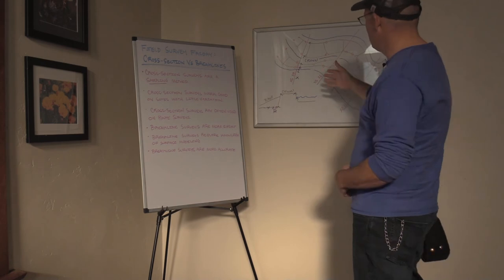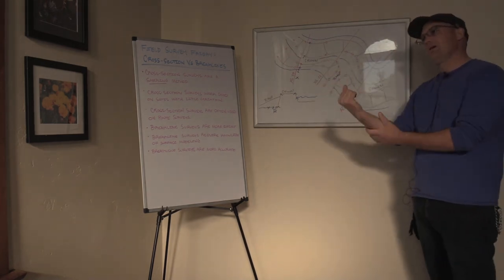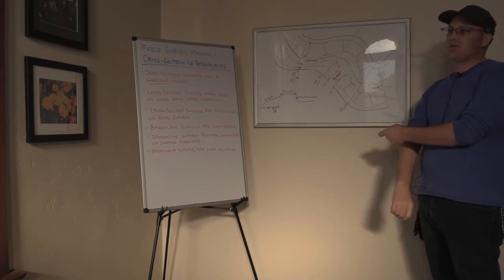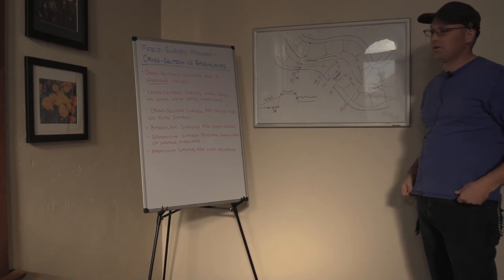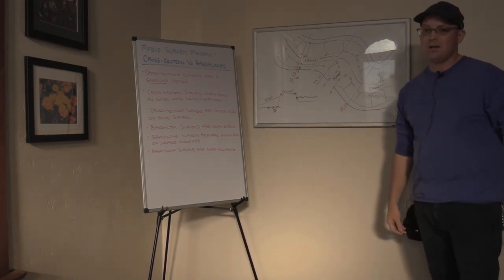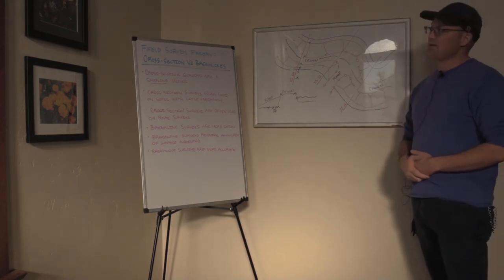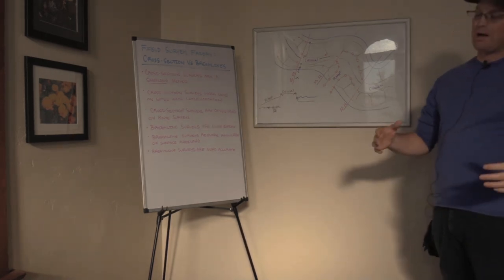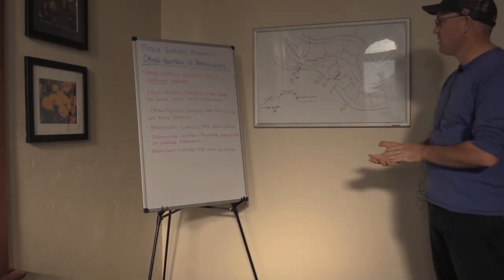So those are the key differences between a brake line survey and a cross section survey. Remember, brake line surveys are more accurate. You're going to get more accurate volumes, more accurate contours. You're going to get more accurate planimetric features out of a brake line survey. So as a general rule in my shop, we don't do cross section topo surveys. We do brake line topographic surveys. And if we need to, we can generate cross sections off of a surface model.